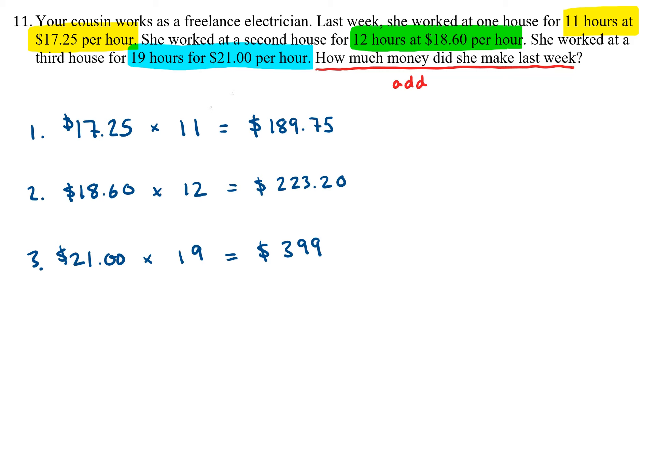Now the question is, how much did she make in total? We want to take these three numbers and add them up. According to the calculator, if we add these up, we get a total of $811.95.